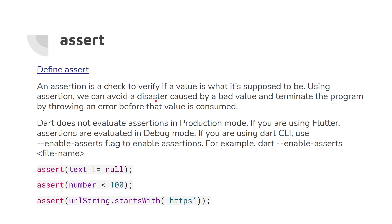'Assert' is used to check and verify if a value is what it's supposed to be. Using assertions we can avoid disasters caused by bad values and terminate the program by throwing an error before the value is consumed. For example, 'assert(text != null)' makes sure text is not null — it's like a double check. Note that Dart does not evaluate assertions in production mode, only in debug mode. From the command line you use 'dart --enable-asserts filename.dart'.